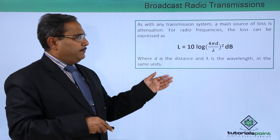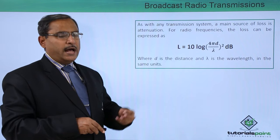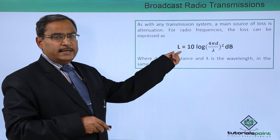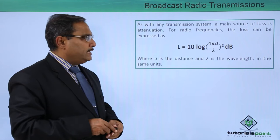As with any transmission system, the main source of loss is attenuation. That means along with the propagation of the signal, the signal strength will get decreased — it will get attenuated and losses will be there. For radio frequencies, the loss can be expressed as L equals 10 log of (4πd/λ)², expressed in decibels (dB), where d is the distance and λ is the wavelength in the same units.